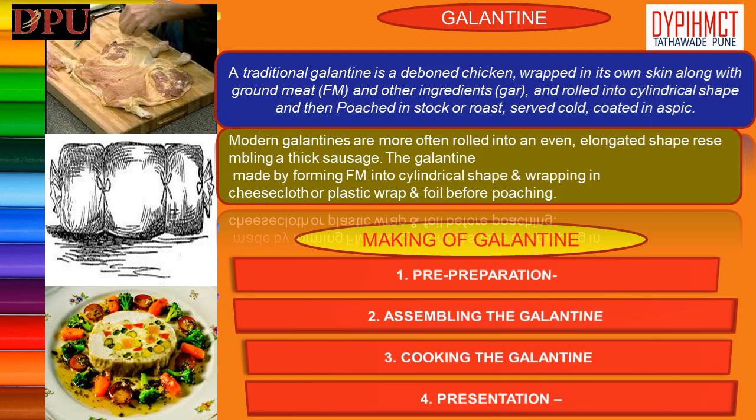Stage 2 — Assembling the galantine: Dust the skin lightly with a pinch of dry gelatin, salt and pepper. Spread the force meat on the skin, one inch thick, leaving a one inch margin of skin all around. Place the marinated breasts lengthwise on the force meat, with the thinner ends of the breast overlapping in the middle. Using cheesecloth or cling wrap, roll the galantine away from you. Tie both ends of the roll like a toffee.